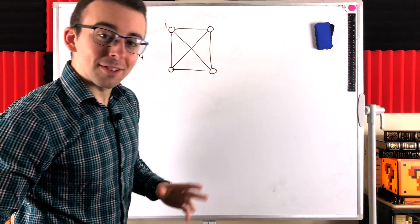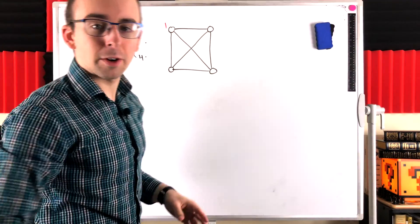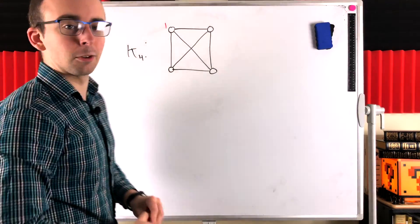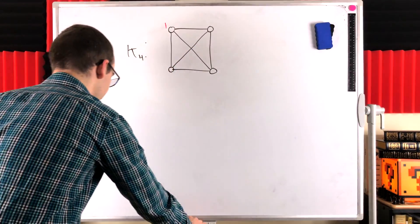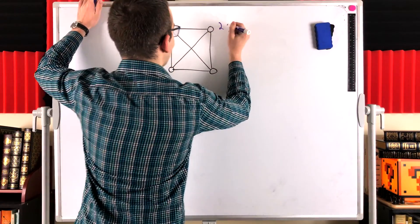Then we know since this is a complete graph, every other vertex has to be adjacent to the vertex we just colored. So no vertex can also be colored one, no other vertex can also be colored one. We know we'll have to break out a new color for the next vertex, maybe we color it two.